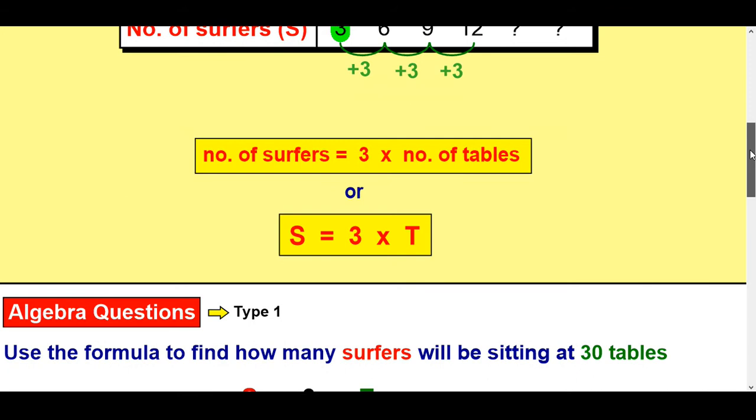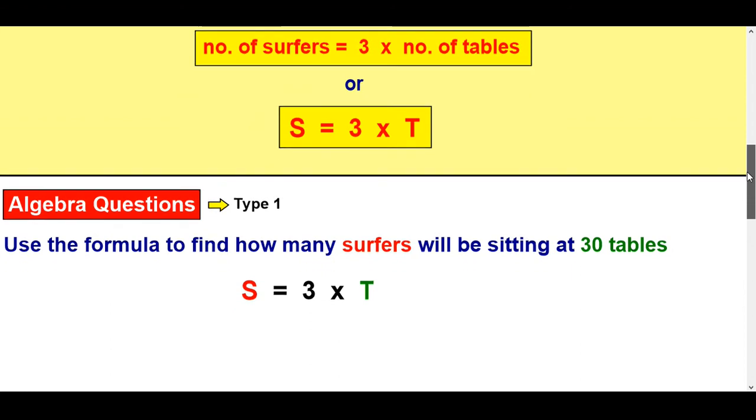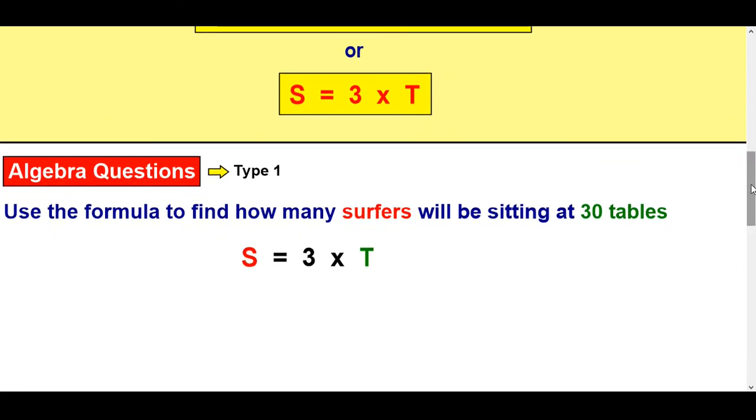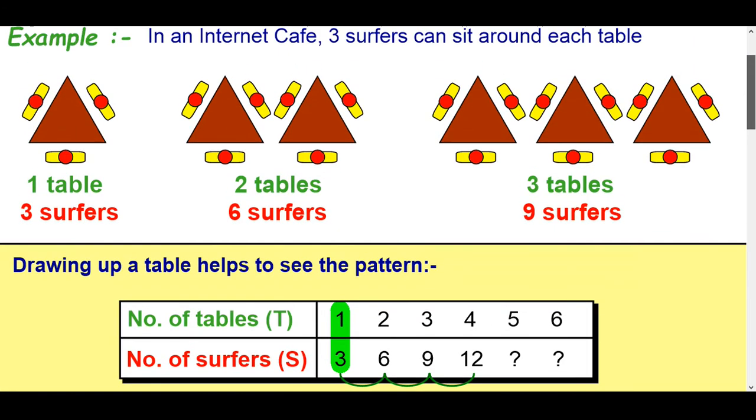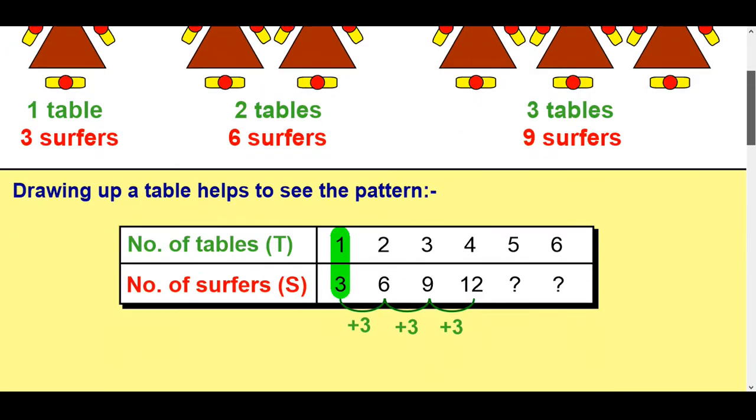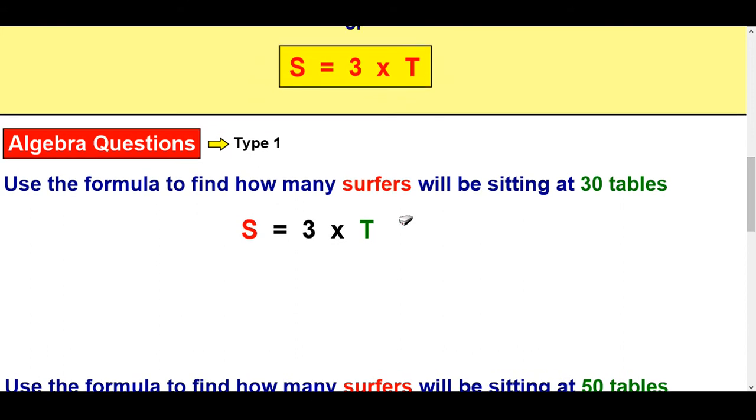Let's look at how to use this. So sometimes you're asked these kind of questions to use the formula. So it says here use the formula to find out how many surfers will be sitting at 30 tables. So this is a more powerful version of using the formula instead of starting off with three diagrams. So you wouldn't draw 30 tables would you to work it out. So if we know that T is 30 then all we do to get this is 3 times 30 and that's going to make 90. So straight away we've worked out how many surfers will be sitting at 30 tables by times by 3.